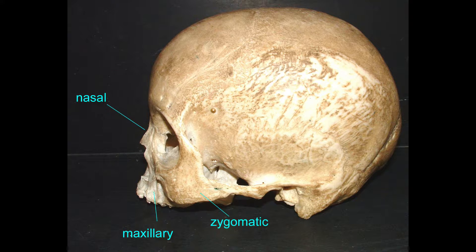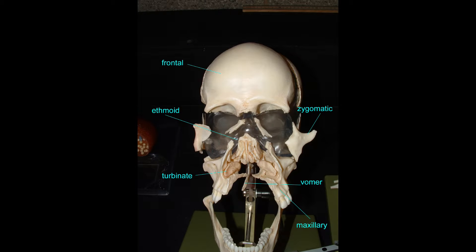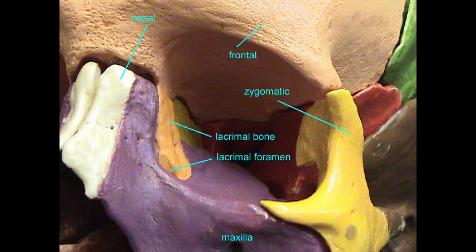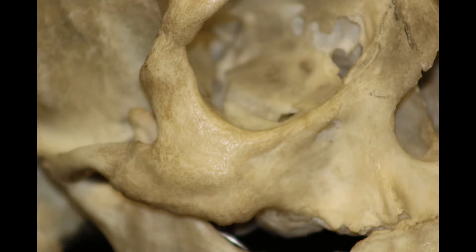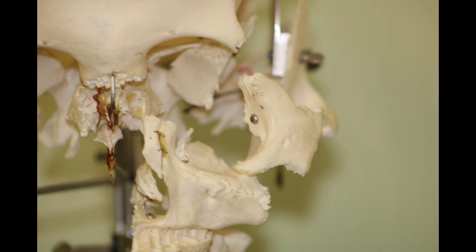It helps to form the zygomatic arch for jaw muscles. The zygomatic arch is made of the zygomatic bone and the zygomatic process of the temporal bone, which contacts it.